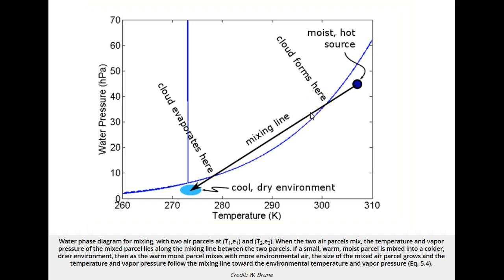If the mixed air parcel continues to entrain cold, dry air, it may eventually cross the equilibrium line back into the vapor region, and the cloud will evaporate. Contrails are one example of a mixing cloud. The contrail length tells you something about the temperature and vapor pressure of the environmental air.